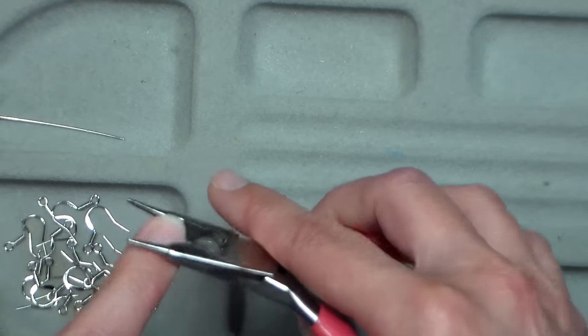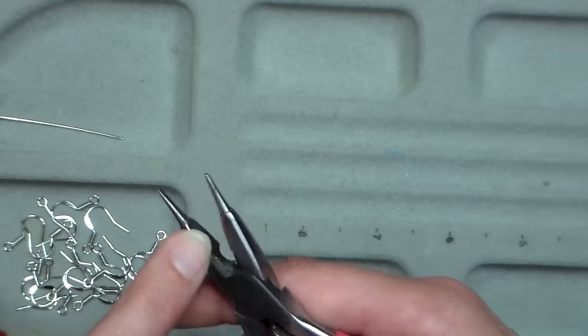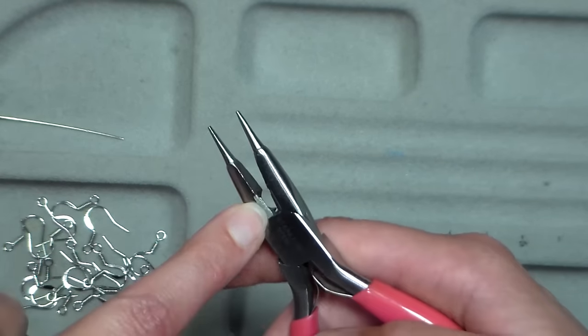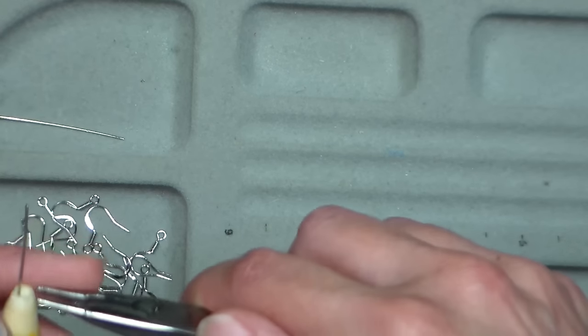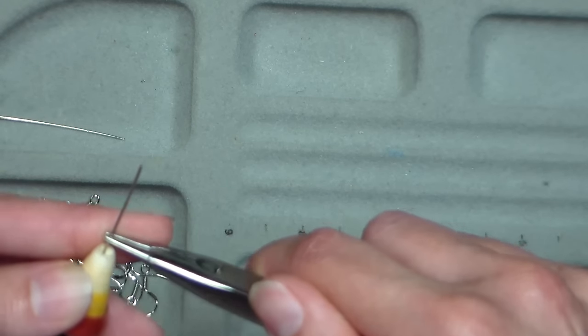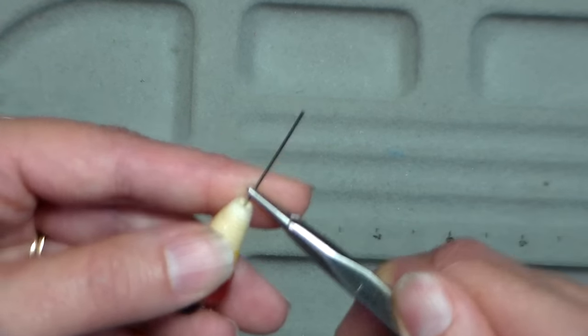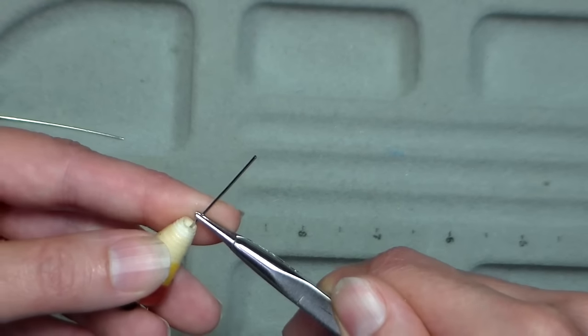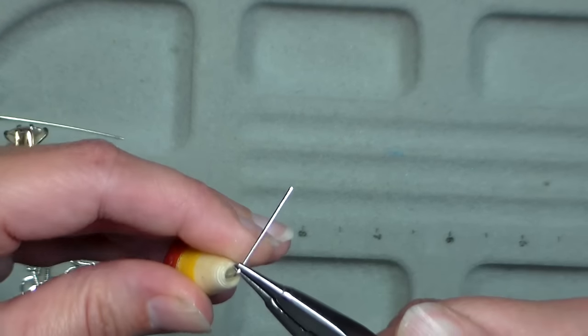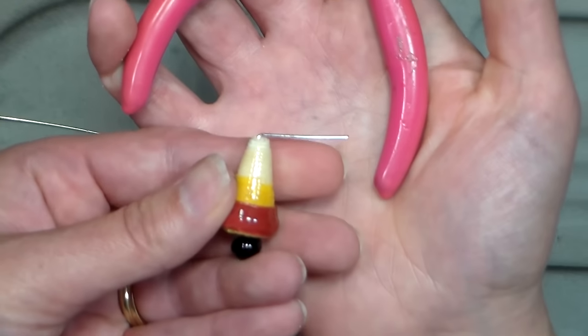What I'm gonna do is use a pair of three-in-one pliers. This is the first tool you should get if you're thinking about jewelry making because it has the needle nose pliers, a smooshy part for flattening out coils and closing crimps, and a little flush cutter. So you want to grab the wire about an eighth of an inch above your bead and bend it at a right angle.